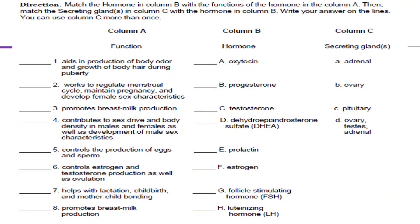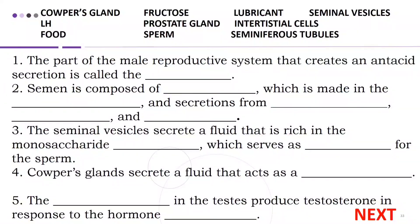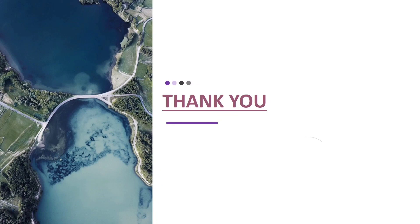For your assessment, match the hormone in column B with the functions of the hormone in column A, then match the secreting glands in column C with the hormone in column B. Write your answer on the lines provided. You can use column C more than once. You have 10 minutes to finish this activity. For part two, fill in the blank with the correct answer; choices are given on top of the questions. That's the end of our class for today. I hope that you learned something. Thank you and have a great day!